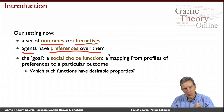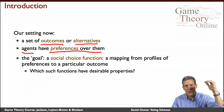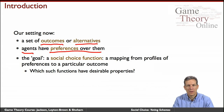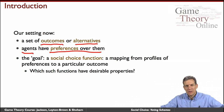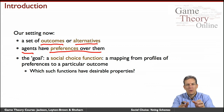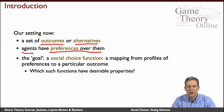For now, people are going to have preferences. They'll be able to tell you: this is my favorite outcome, this is my second favorite, my third, my fourth, and so forth. What a social choice function is going to do is take the preferences of the individuals and, as a function of those, tell us which outcome we're going to choose. So it's going to be a map from profiles of preferences to a particular outcome.